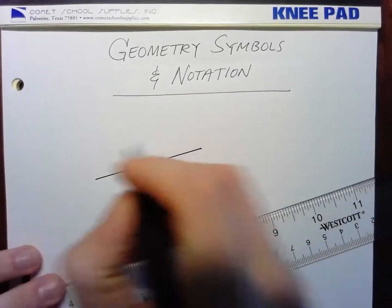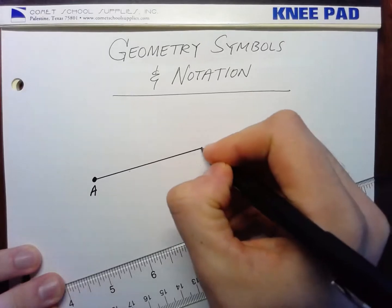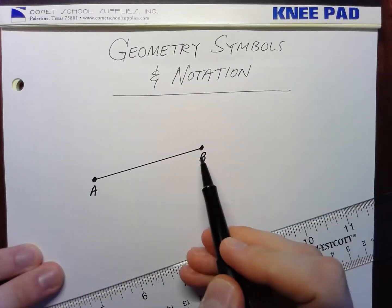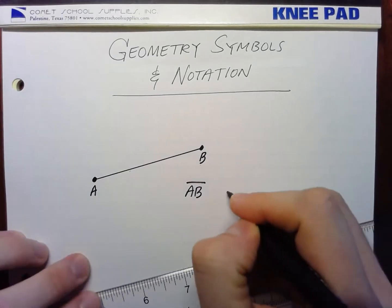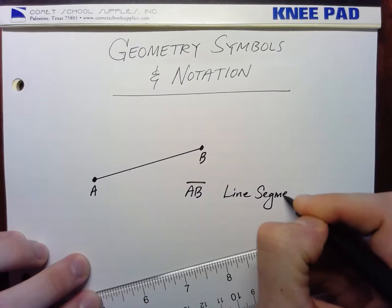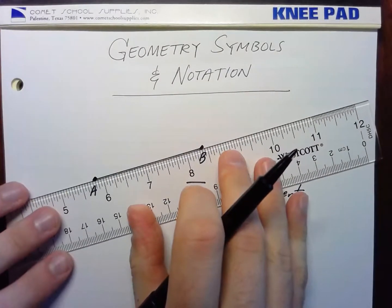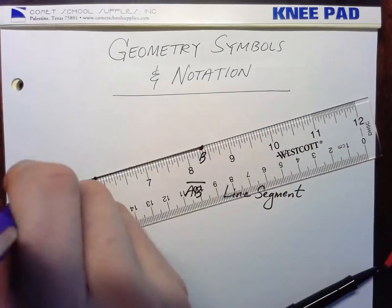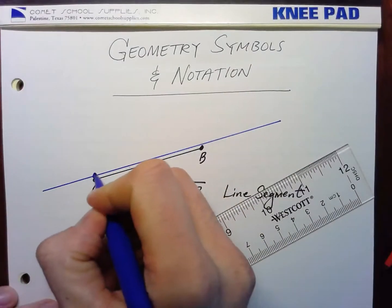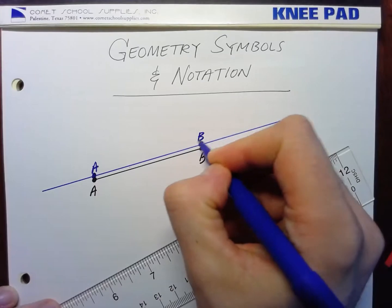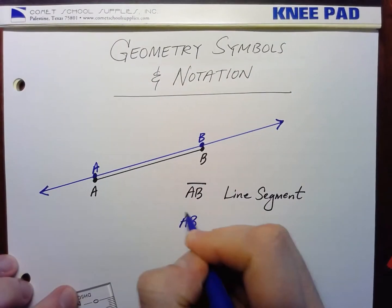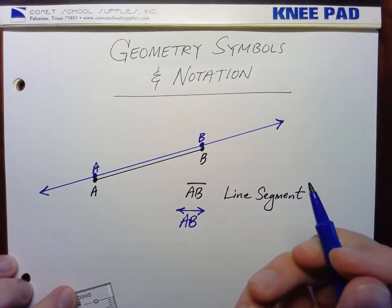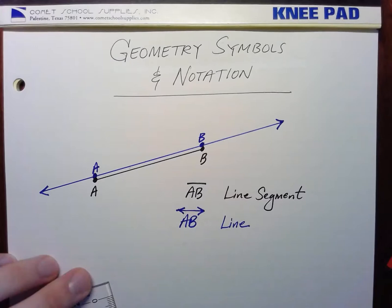So let's say we have some point A and point B. The line segment that connects these two is AB with just a bar over it — that would be a line segment. But let's say that I had actually extended it forever into an actual line, going through those points and going on forever. Then this would be AB with a double-headed arrow over it, and that is a line. This is line segment AB and this is line AB.